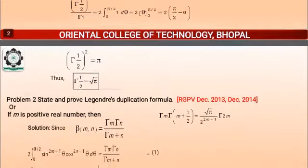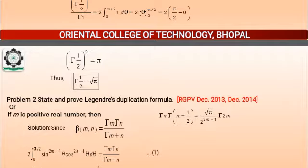Come to the next question: State and prove the Legendre Duplication Formula. It can be written as: if M is a positive real number, then Gamma(M) times Gamma(M + 1/2) equals under root pi times Gamma(2M) upon 2^(2M-1).